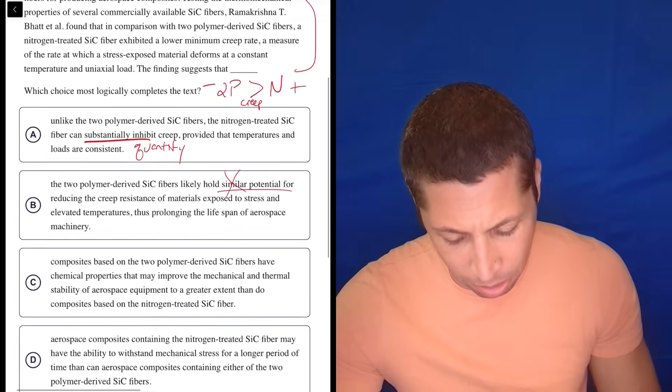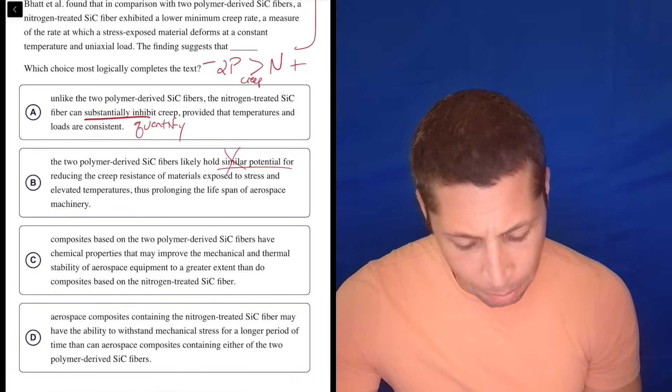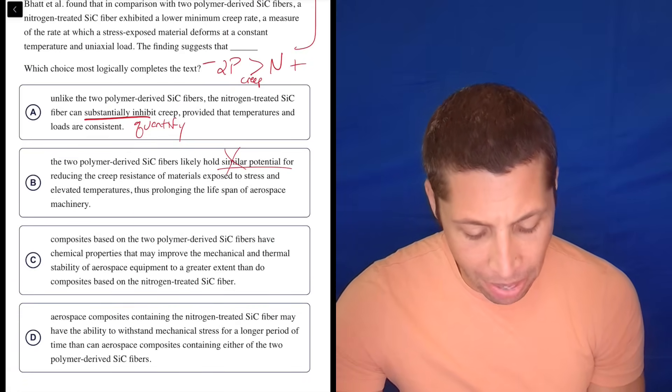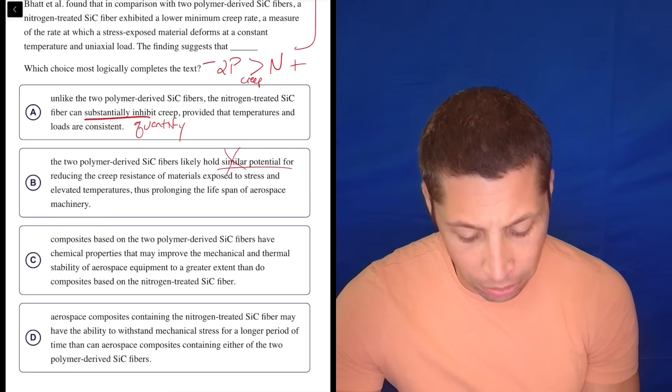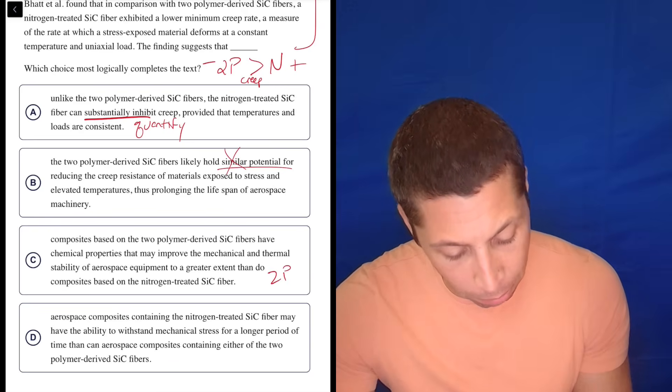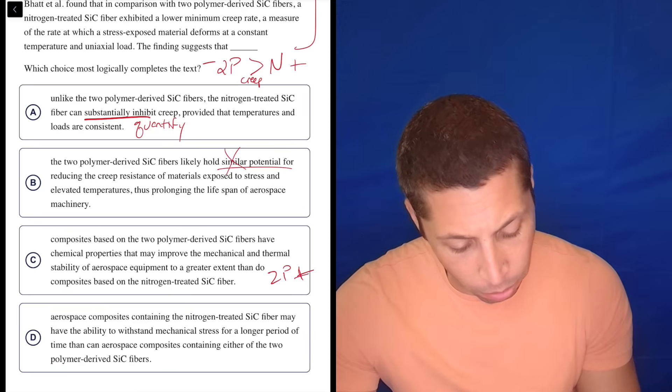Maybe I'm misreading this one. C: Composites based on the two polymer-derived SiC fibers have chemical properties that may improve the mechanical and thermal stability of aerospace equipment to a greater extent than do composites based on the nitrogen-treated SiC. No, this is saying the two polymer is better. No, no, no—the two polymer's worse. This is wrong.